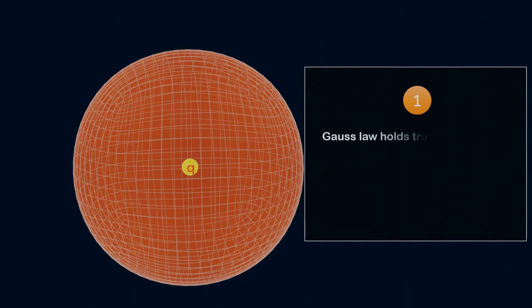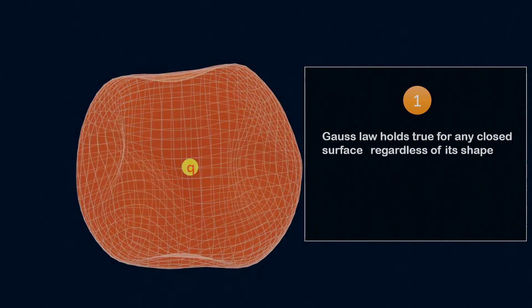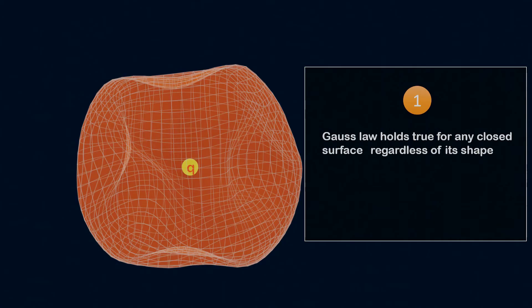First, Gauss law holds true for any closed surface, regardless of its shape. This means that no matter what the shape of the surface is, the electric flux linked with it, denoted as φ_E, will always be equal to Q divided by epsilon naught.